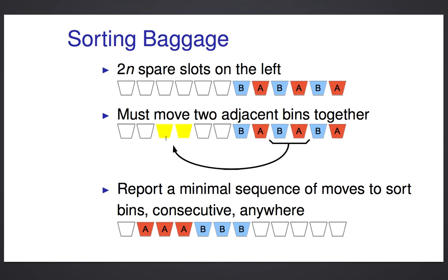But to rearrange the bins, you have to move them two at a time. You've got a machine that'll pick up two adjacent bins, put them in some empty spaces, and then you can repeat this as many times as you want until you have them sorted. To get them sorted, you need all the A bins on the left, all the B bins on the right, all consecutive, but they can be anywhere in the space, so they can end up occupying some of those initially spare spaces.